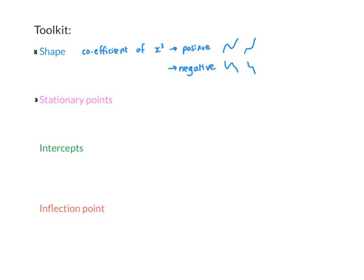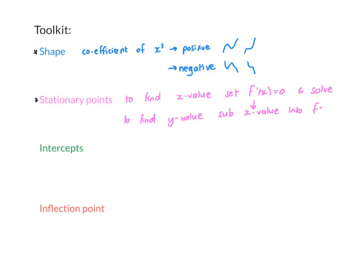Next we'll look at the stationary points. The stationary points are where the graph has a gradient of zero, which means it's where the derivative is zero. To find the x value, you set the derivative equal to zero and solve, and then to find the y value of the stationary point, you take the x value you found and substitute it back into the original equation — not the derivative, but the original.